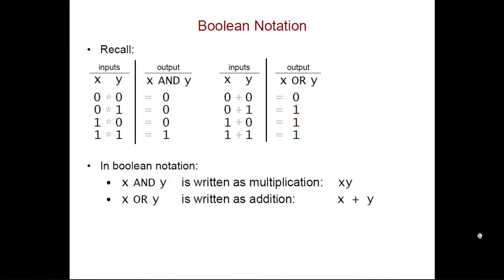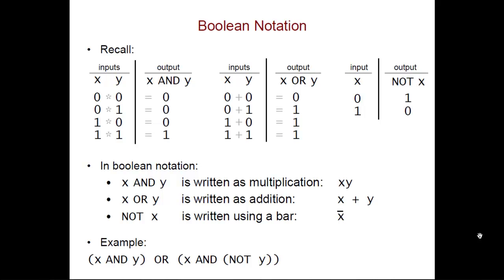For the NOT operator, or the NOT gate, we're going to write that using a bar over the variable. For example, if this is my Boolean expression, x AND y OR x AND NOT y, I can take that first component, the x AND y, and write it as xy.